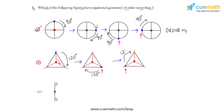Rotating once more by 120 degrees clockwise, we get back to the question figure. Since the figure has been rotated three times to return to the original, we conclude that figure B has an order of rotation of 3, meaning it also has a rotational symmetry of order more than one.